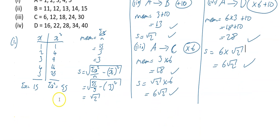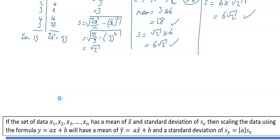In general, if a set of data x₁, x₂, … xₙ has mean x-bar and standard deviation sₓ, then scaling using the formula y = ax + b gives a new mean ȳ = ax̄ + b and a new standard deviation s_y = |a| · sₓ. The modulus of a just means make it positive — so if you multiply by minus 5, your new standard deviation would be 5 times sₓ.